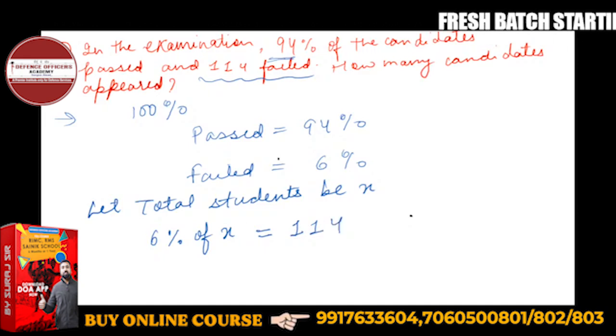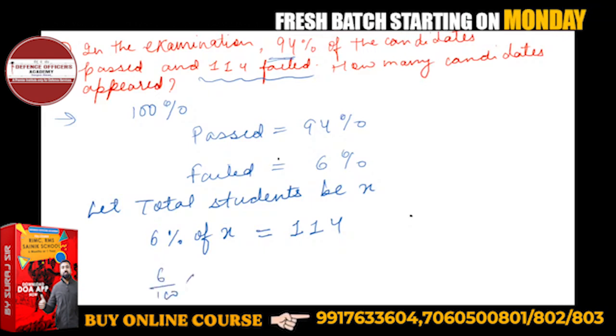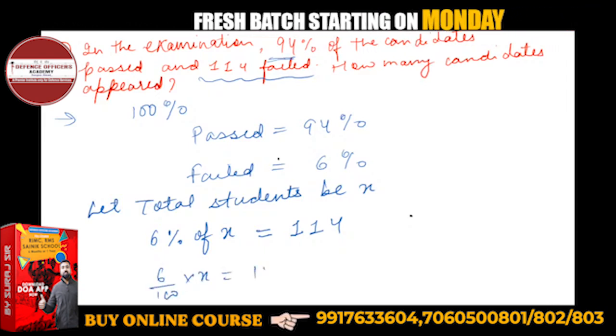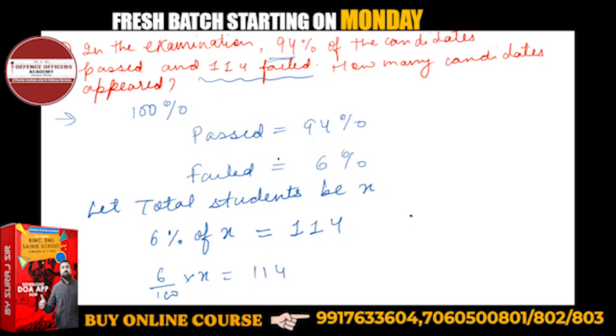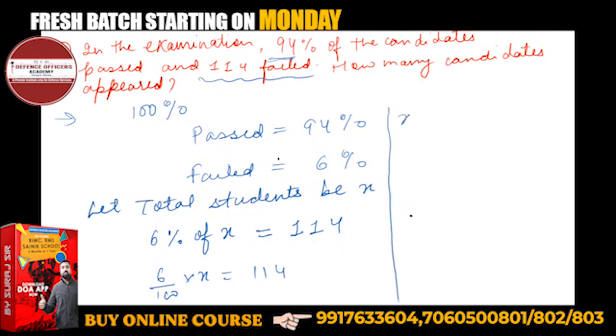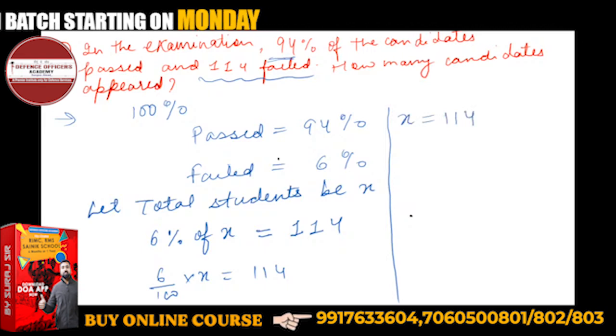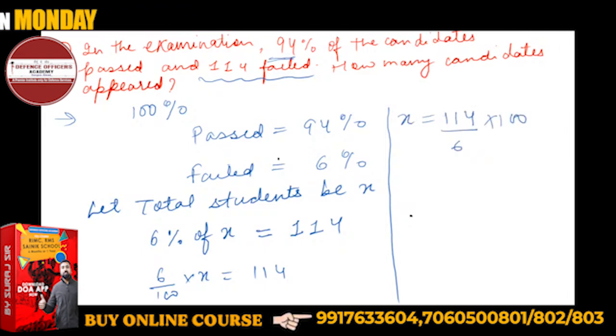You can solve this very easily. So 6% 6 upon 100 into x will going to give you 114. From here, x will be is equal to 114 upon 6 into 100. 6 19 times. So 6 ones are 6, and 6 nines are 54. So 1900 will be the answer.